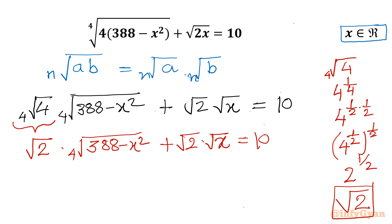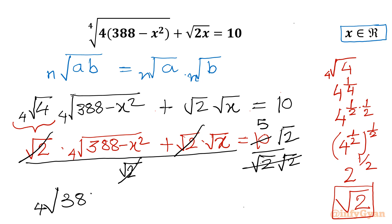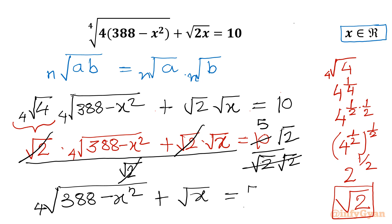Now I will divide both sides by √2. Cancelling √2 on the left, and on the right side multiplying numerator and denominator by √2, giving 10√2/2 = 5√2. Our equation converts into: the 4th root of (388 minus x squared) plus √x equal to 5√2.